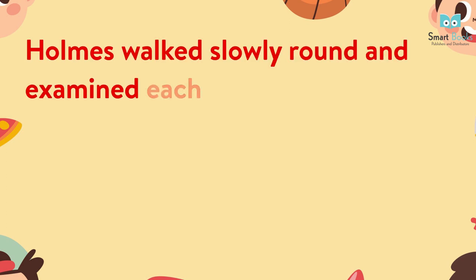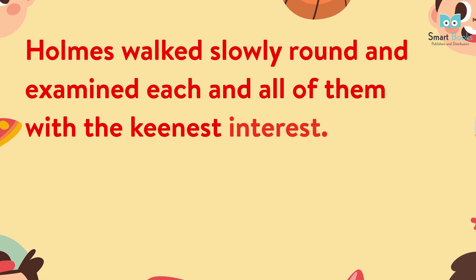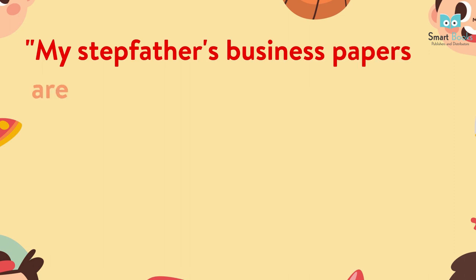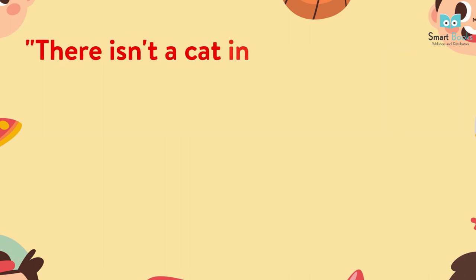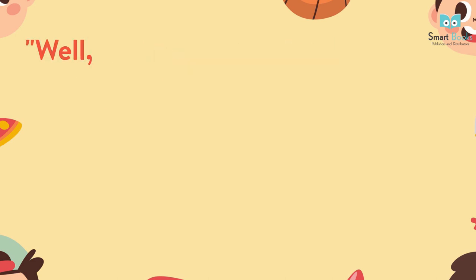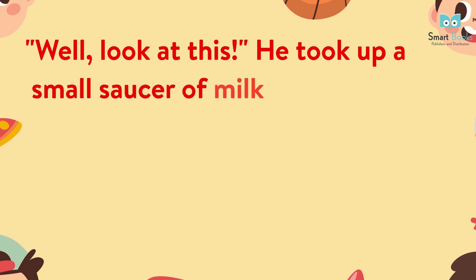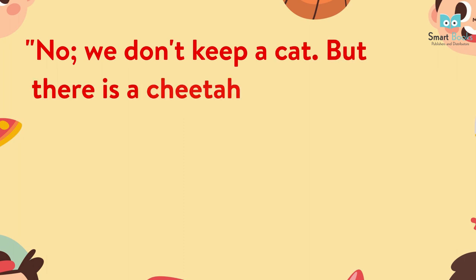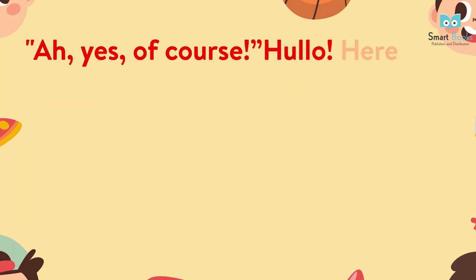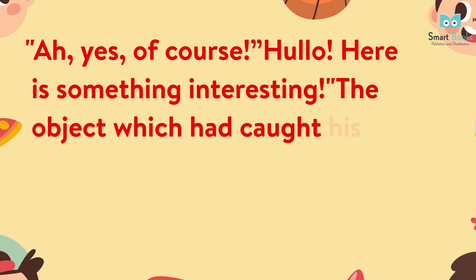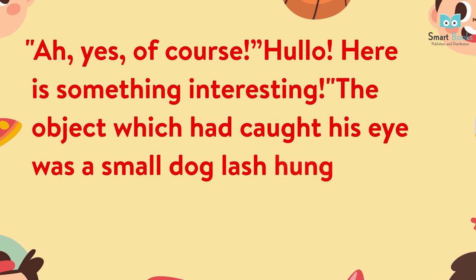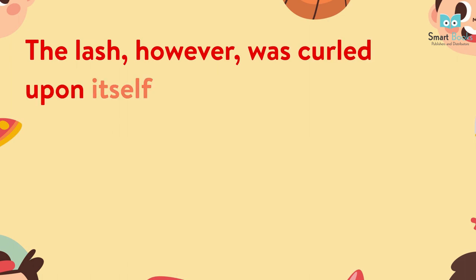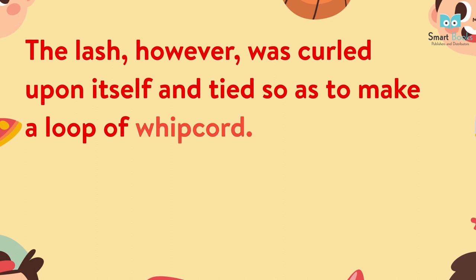Holmes walked slowly round and examined each and all of them with the keenest interest. 'What's in here?' he asked, tapping the safe. 'My stepfather's business papers are in it.' 'There isn't a cat in it, for example?' 'No. What a strange idea.' 'Well, look at this.' He took up a small saucer of milk which stood on top of it. 'No, we don't keep a cat. But there's a cheetah and a baboon.' 'Ah, yes, of course. Hello. Here's something interesting.' The object which had caught his eye on the side of the bed was a small dog lash hung on one corner of the bed. The lash, however, was curled upon itself and tied so as to make a loop of whipcord.